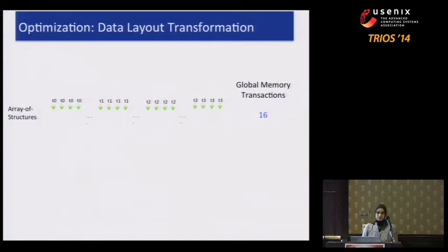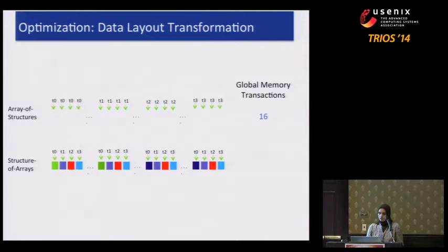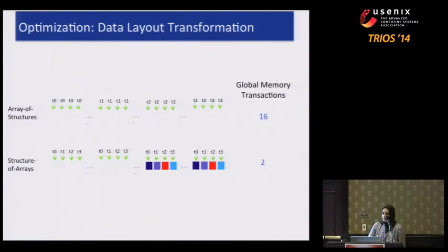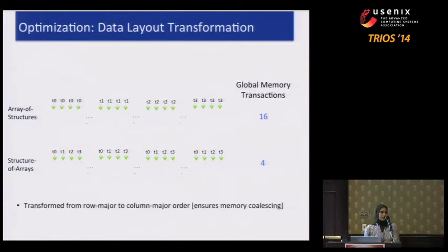A very common optimization is to change this layout from array-of-structures (row major) to structure-of-arrays (column major), where you put all the same members together so threads can access sequential memory locations. Given the GPU architecture, you're then able to coalesce, ending up with only four transactions as opposed to 16. It's well known that GPUs can benefit from this optimization.